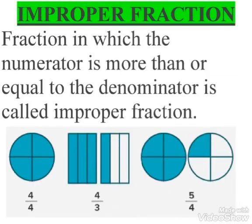Improper fraction. A fraction in which the numerator is more than or equal to the denominator is called an improper fraction. In the first figure, 4 upon 4: the numerator equals the denominator, so it is an improper fraction. In the second, 4 upon 3: 4 is greater than 3, so it is an improper fraction. In the third case, 5 upon 4: 5 is greater than 4, so it is also an improper fraction.